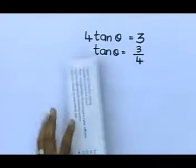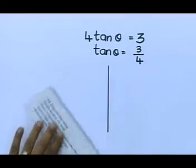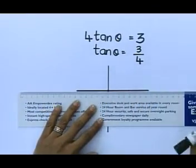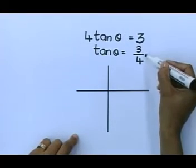Tan θ is 3 quarters, and I am going to draw the Cartesian plane first. That's my y-axis. This is my x-axis. Very important: Which quadrant are you working in?